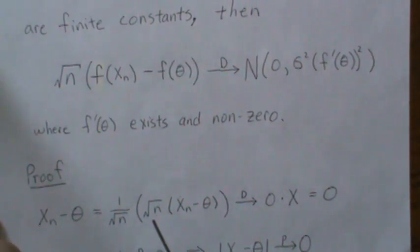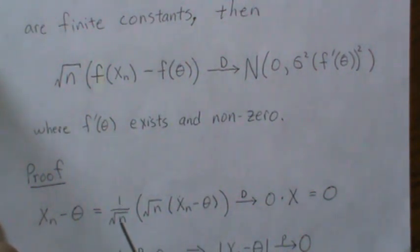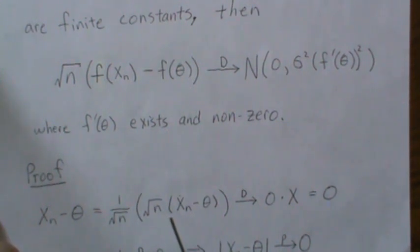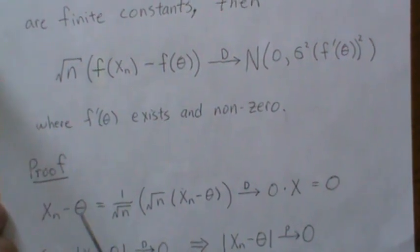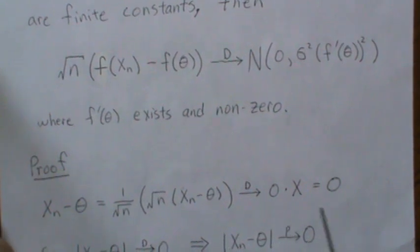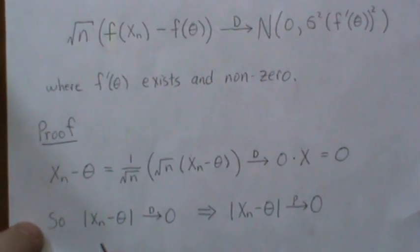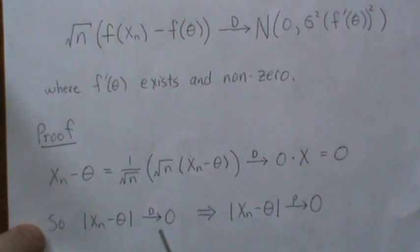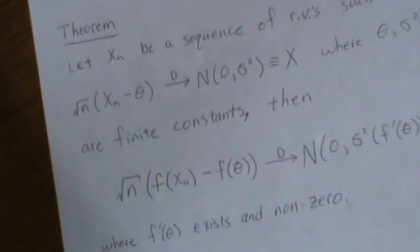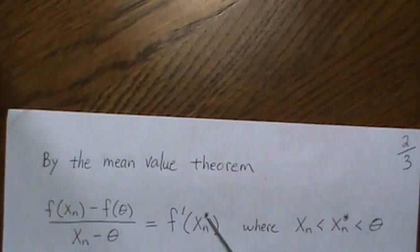If we multiply by one and look at the limit as n grows to infinity, this piece converges to zero and this converges to a normal(0, sigma squared) random variable. So this piece converges in distribution to normal(0, sigma squared). But convergence in distribution implies convergence in probability, so we know X_n converges to theta in probability.